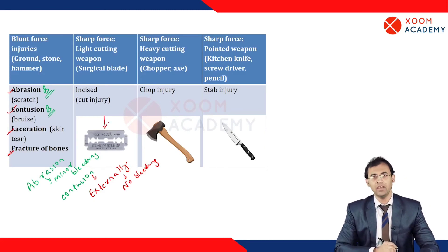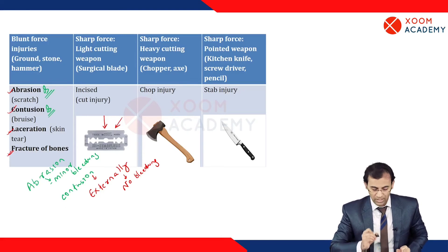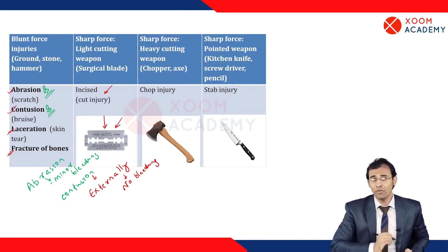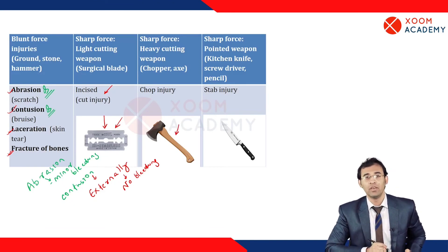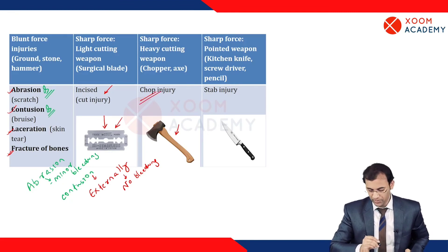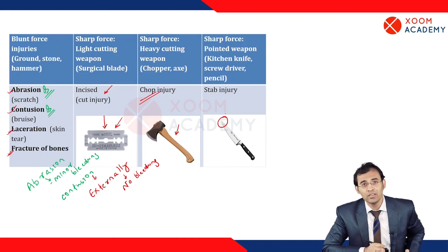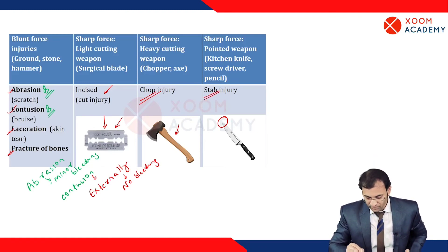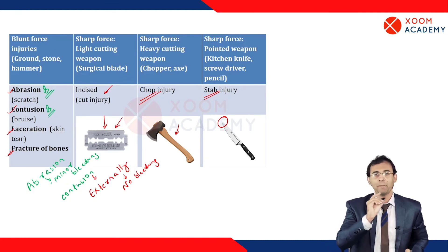For sharp cut injuries: when a light cutting weapon like a blade is used — even a surgical blade used by a surgeon for incision — this is called incised injury or cut injury. When a heavy cutting weapon like an axe or chopper is used, it results in chop injury. When a pointed weapon like a knife or screwdriver penetrates the body, this is called stab injury. So chop injury, incised injury, and stab injury are all examples of sharp cutting injury.